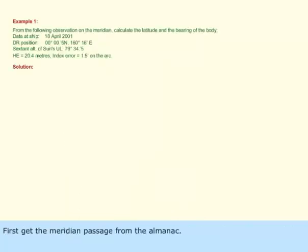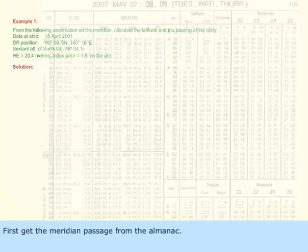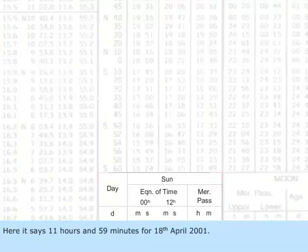Example 1: First, get the meridian passage from the almanac's page. Here it says 11 hours and 59 minutes for 18th April 2001.